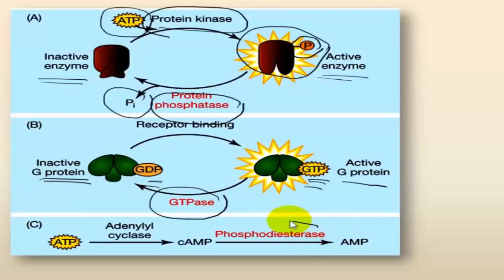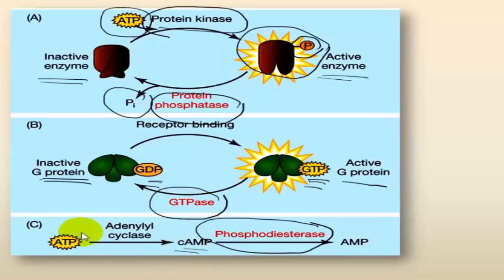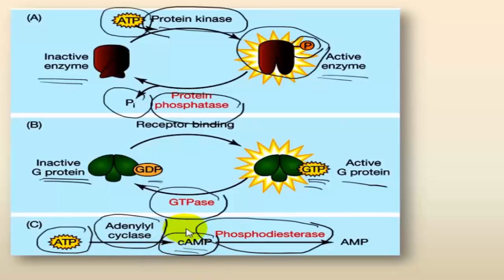A third mechanism uses phosphodiesterases. Cyclic AMP, the second messenger, is produced from ATP by adenylyl cyclase. Cyclic AMP is rapidly deactivated by phosphodiesterase, which converts cyclic AMP into AMP, the inactive form.